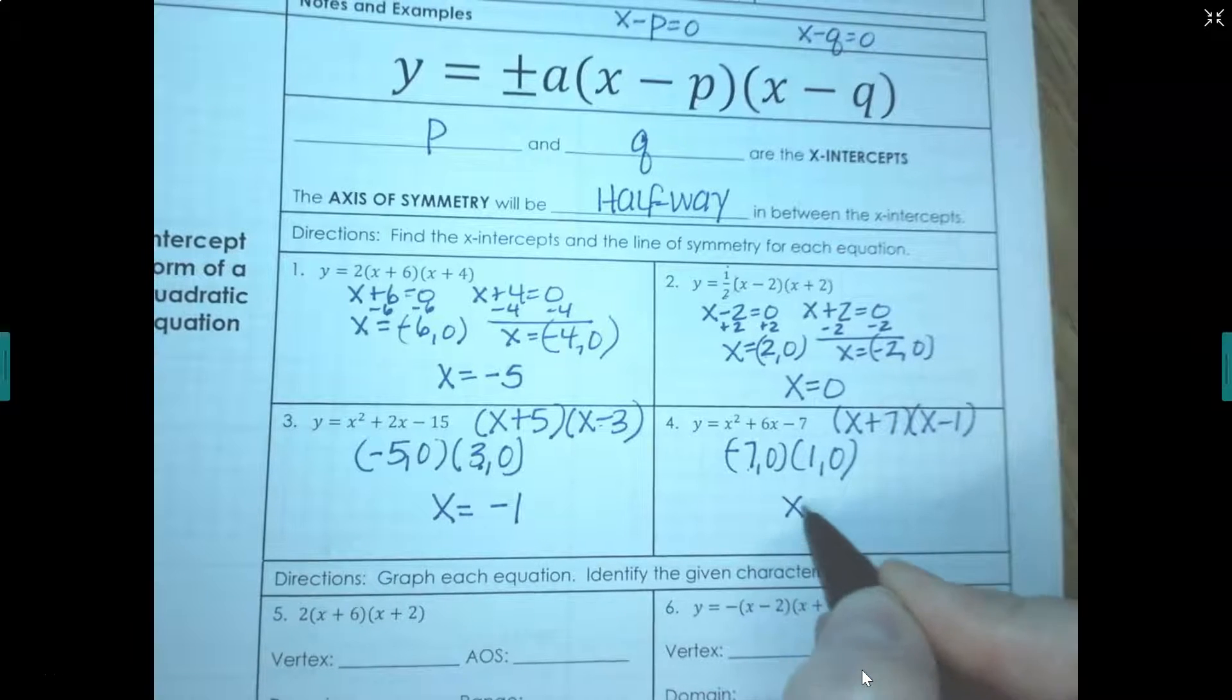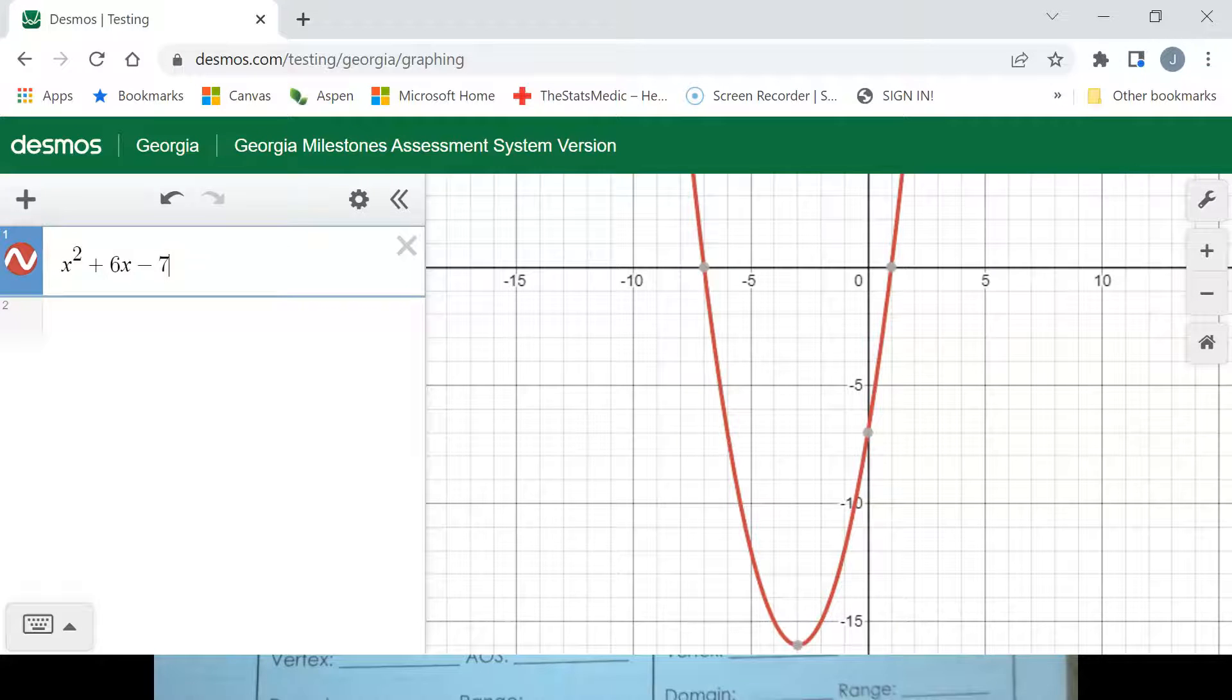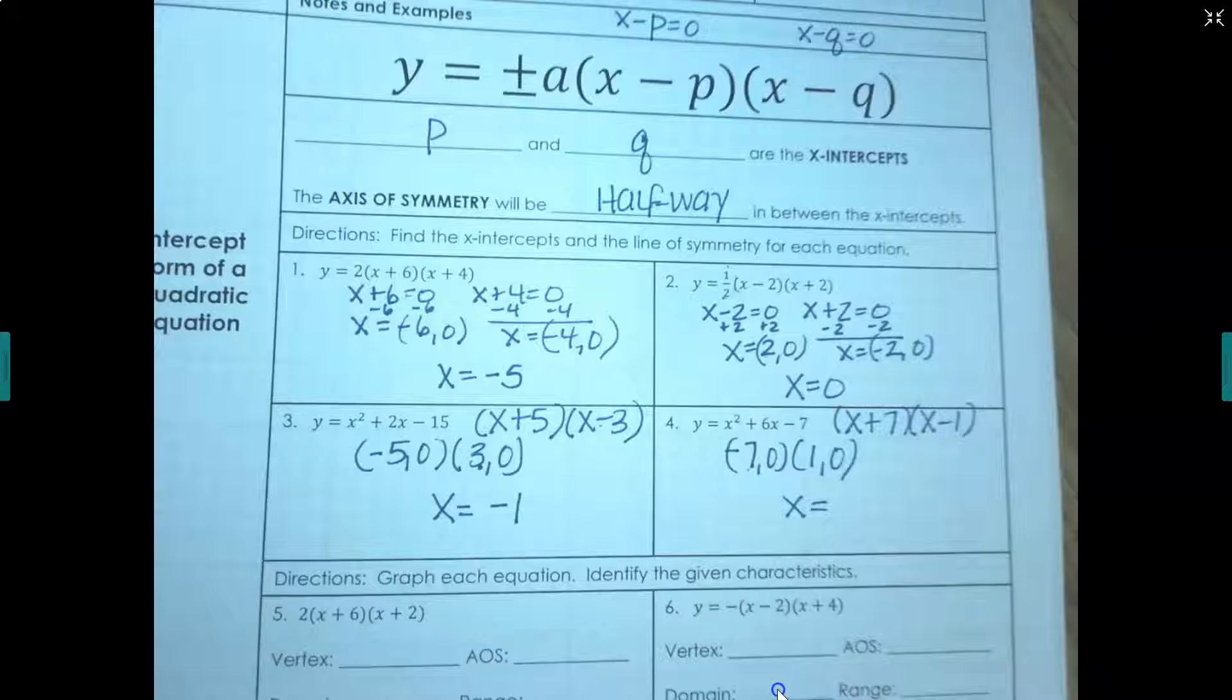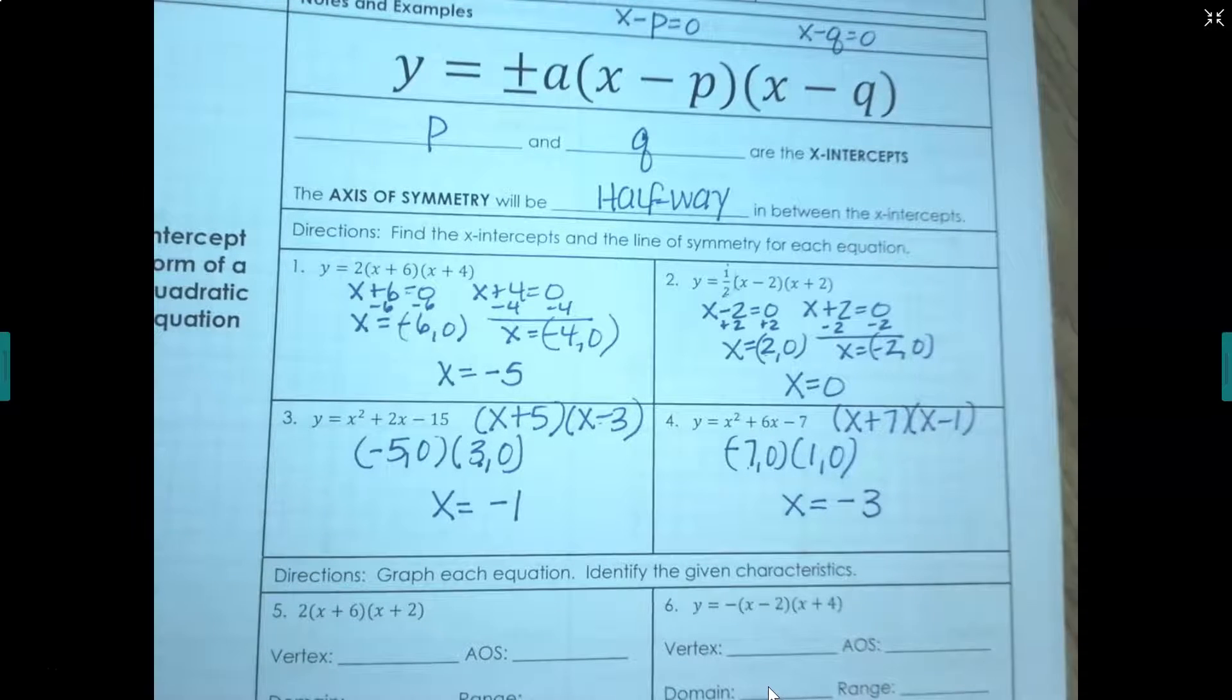Now our axis of symmetry, well let's look at our graph and take a look at our vertex here. So our vertex is way down here at negative 3, negative 16. Remember your axis of symmetry is the same value, the x value of your vertex. So x equals negative 3 in this case.